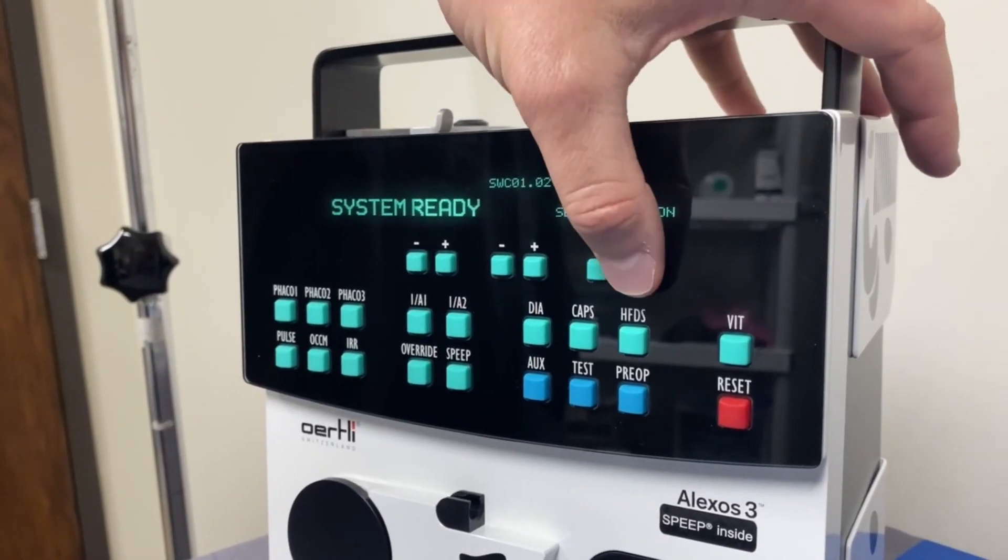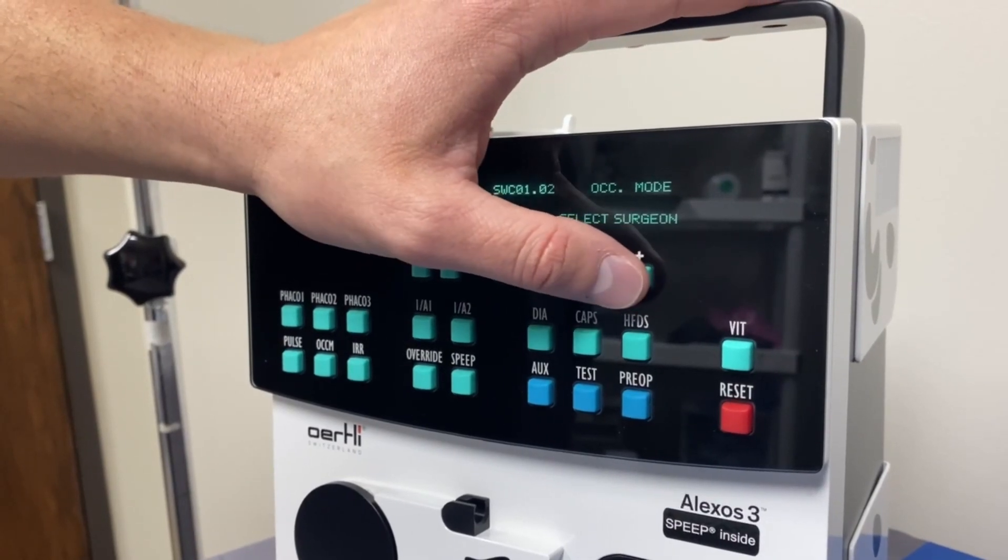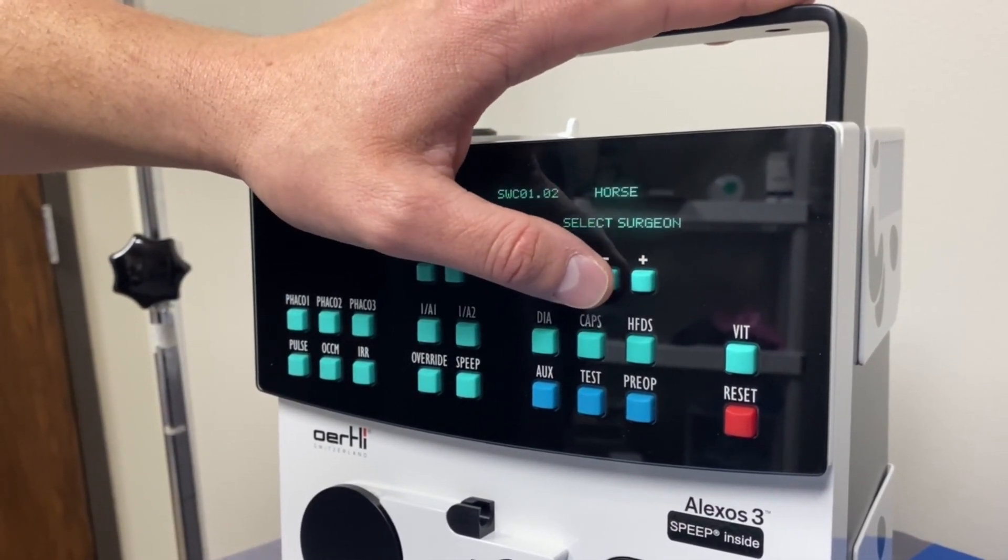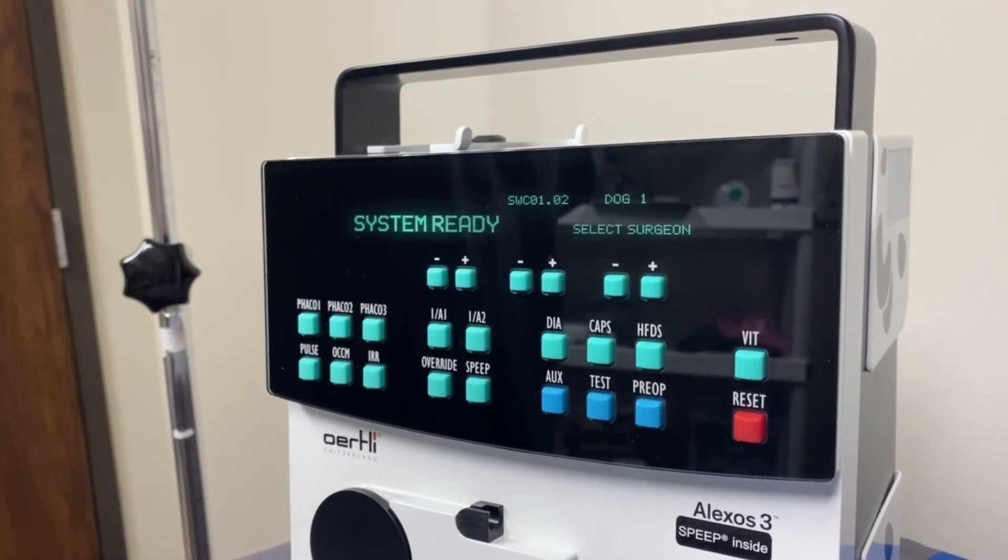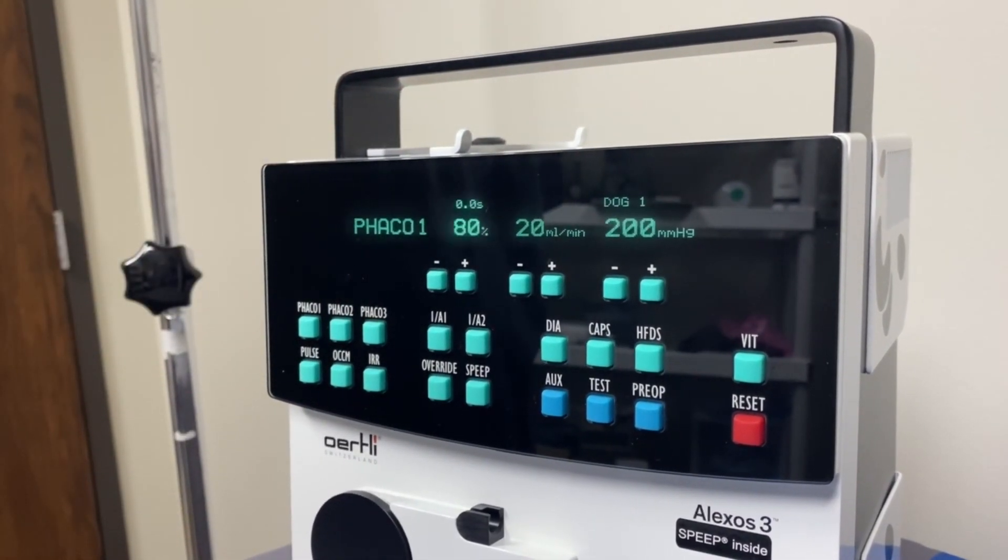From the startup screen, select the desired FACO program from the memory using the plus and minus keys on the upper right-hand side of the display panel. Select FACO using the function key on the display panel.